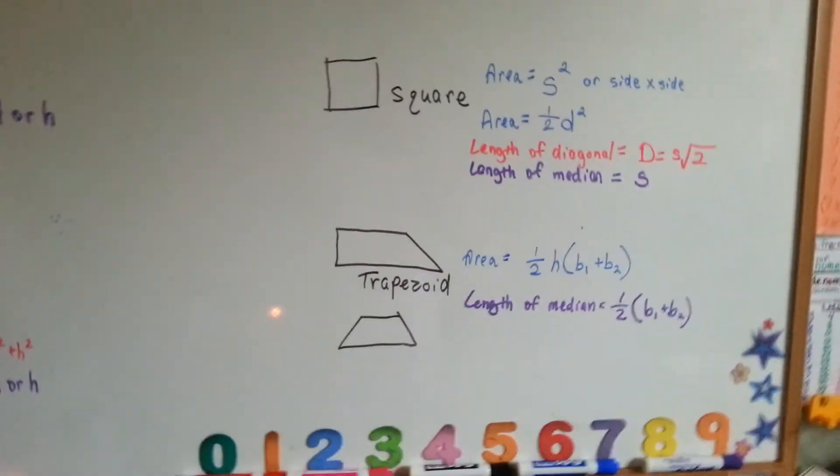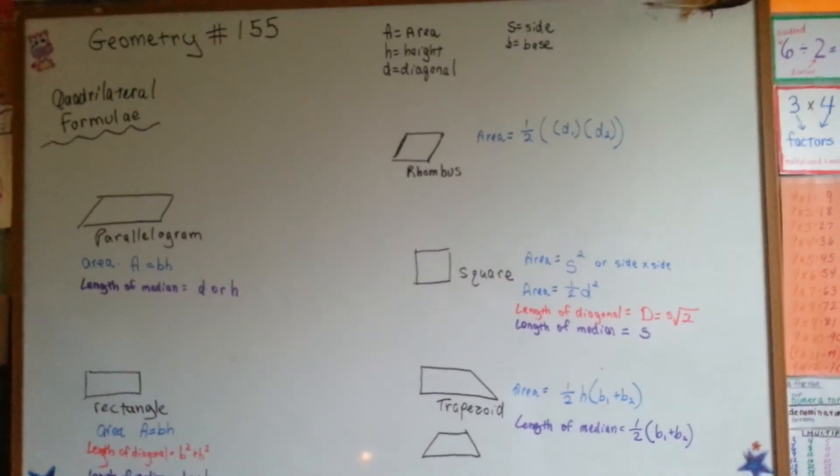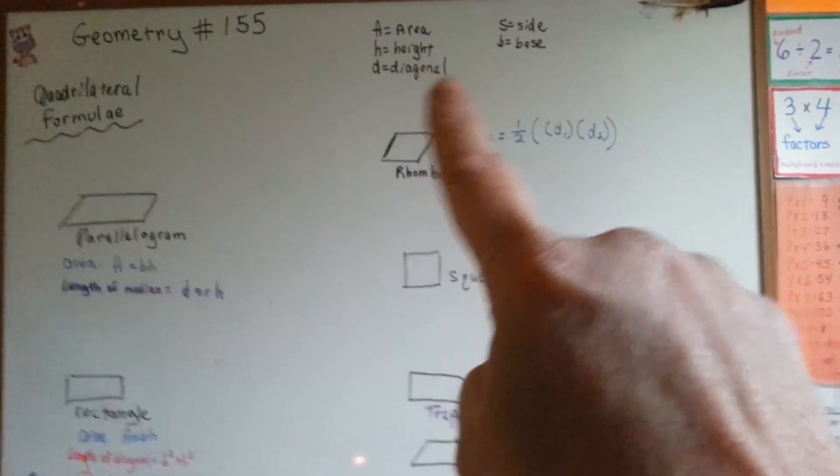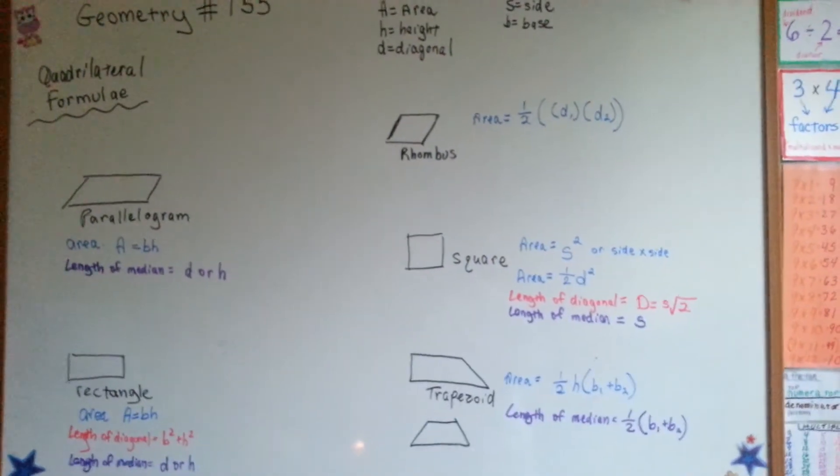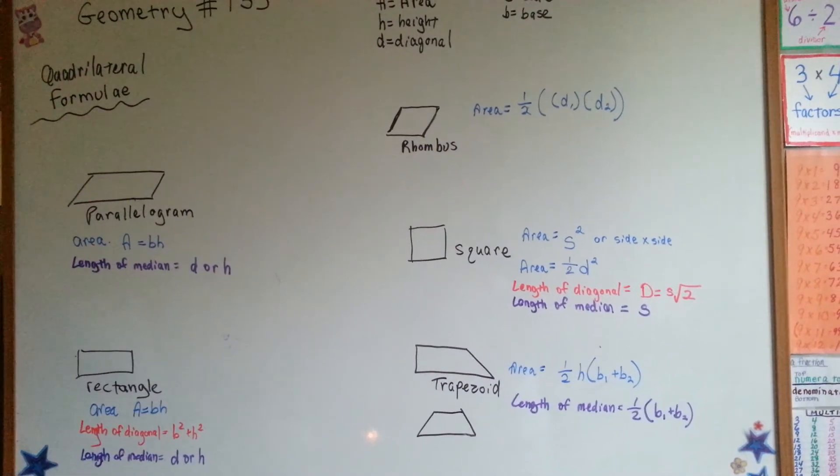Those are some quick formulas for quadrilaterals. I'm going to back up so you can see them all in one glance. And these are what the letters mean, but you really should know these by now, because that's like basic algebra stuff. I hope this helps, and I'll see you next video. Thank you.